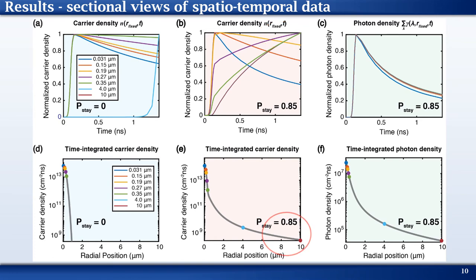For photon recycling, charge carriers are generated even at distances of 10 microns as seen in the bottom figures. Since the radial profiles are shown on a logarithmic scale, it may appear that tails are heavily populated. But most of the carrier density is located in the central region below 1 micron.